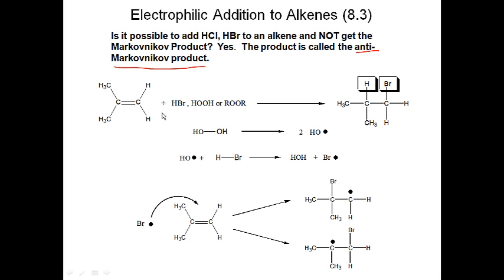Here is an example: H added to the carbon with the least number of hydrogens and bromine added to the other — that's anti-Markovnikov. The way we do this is to take HBr but add either hydrogen peroxide (H2O2) or an organic peroxide with structure ROOR. This is going to be a free radical mechanism.